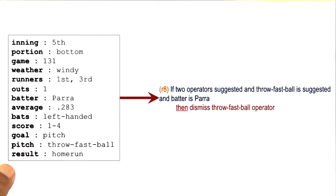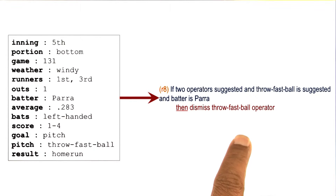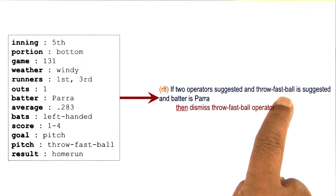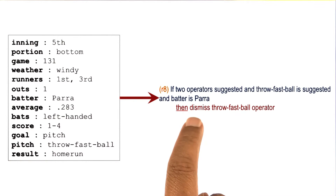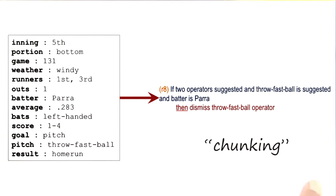Given this episodic knowledge about the event that occurred earlier, Soar has a learning mechanism that allows it to encapsulate knowledge from this event into the form of a production rule that can be used as part of the procedural knowledge. The learned rule is: if two operators are suggested, and 'throw a fast ball' is one of those operators, and the batter is Para, then dismiss the 'throw a fast ball' operator. This process of learning is called chunking — a learning technique that Soar uses to learn rules that can break an impasse.